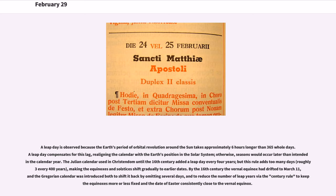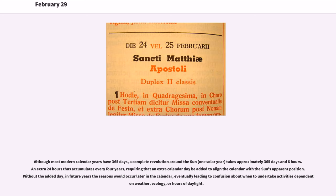Although most modern calendar years have 365 days, a complete revolution around the Sun — one solar year — takes approximately 365 days and six hours. An extra 24 hours thus accumulates every four years, requiring that an extra calendar day be added to align the calendar with the Sun's apparent position. Without the added day, in future years the seasons would occur later in the calendar, eventually leading to confusion about when to undertake activities dependent on weather, ecology, or hours of daylight.